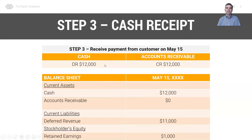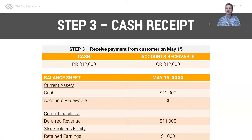A couple weeks later our customer pays us — they send us a check for $12,000. We debit cash for $12,000, which increases our cash balance, and we credit AR, which decreases our AR by $12,000. In this case it's simply moving the $12,000 from AR to cash.